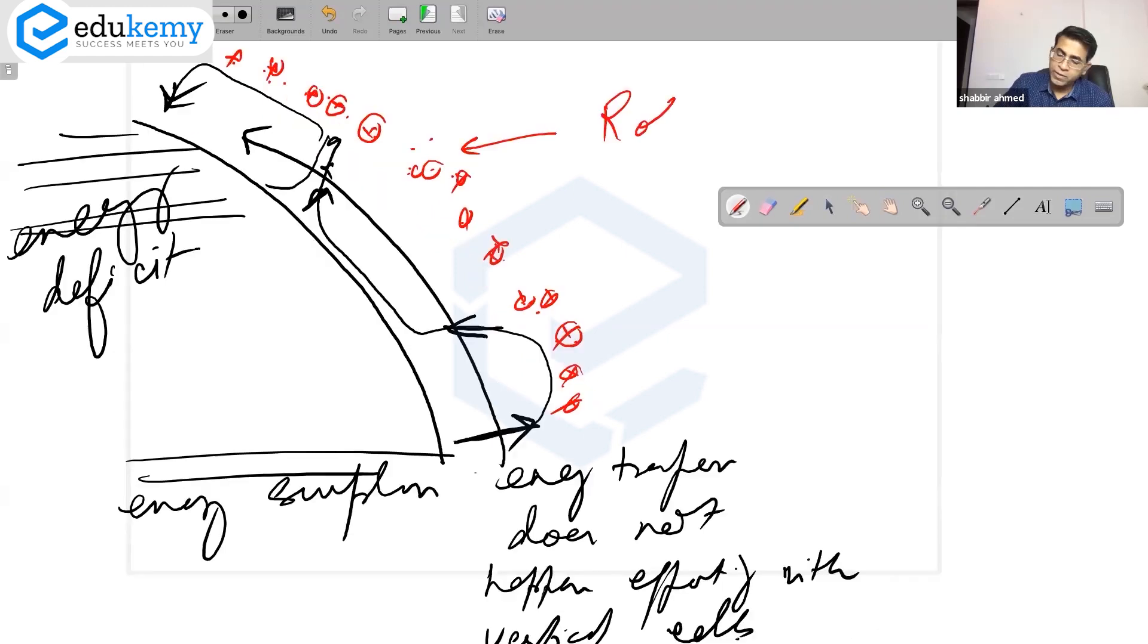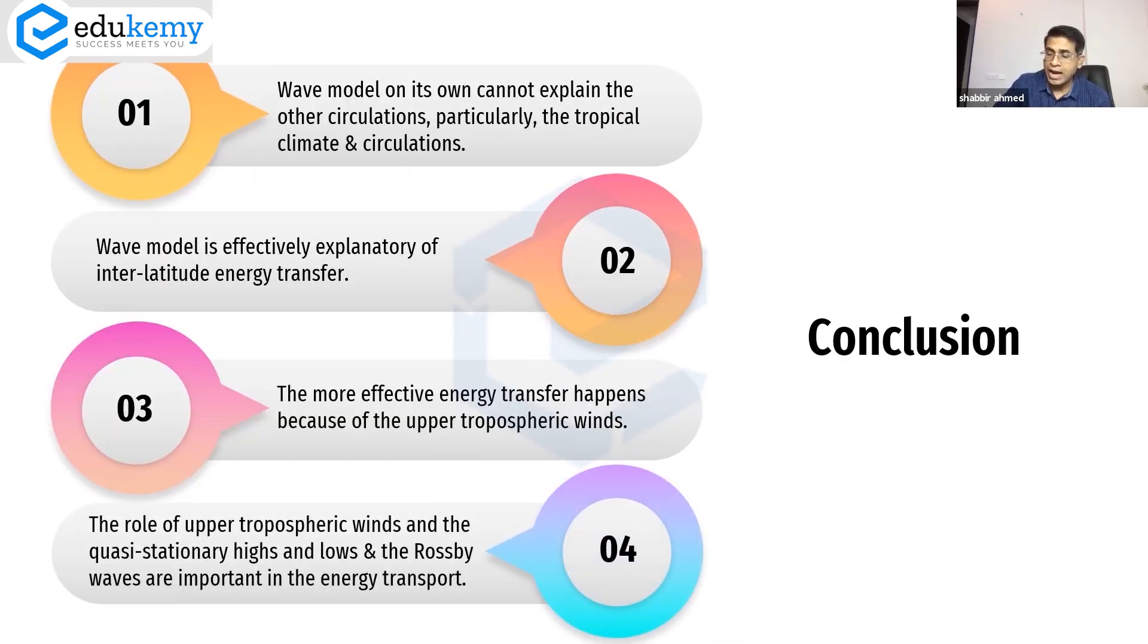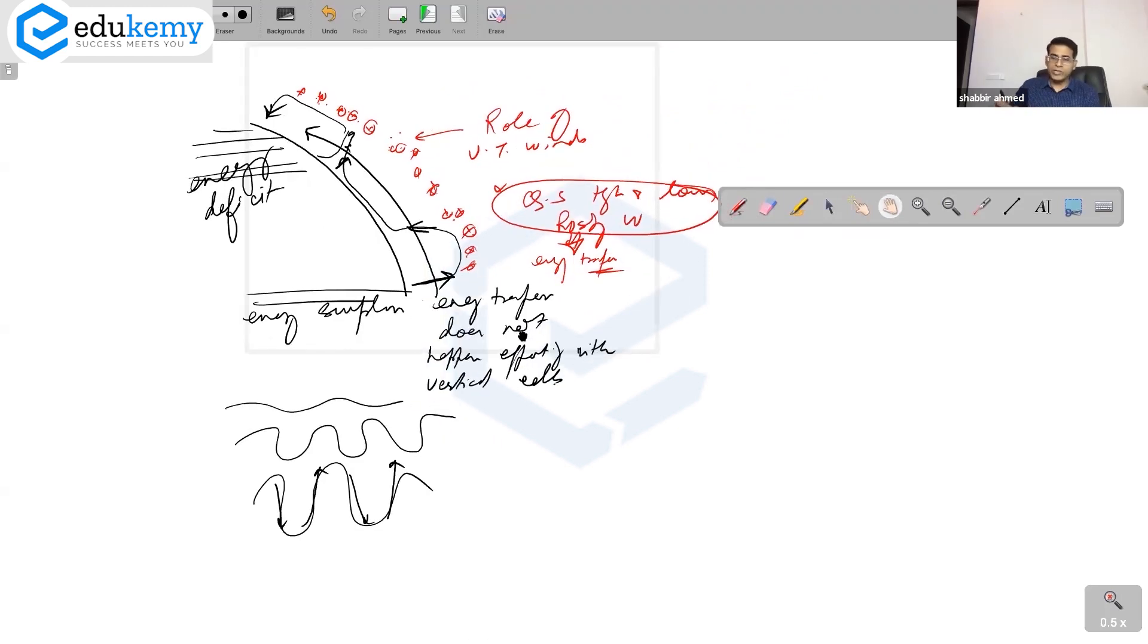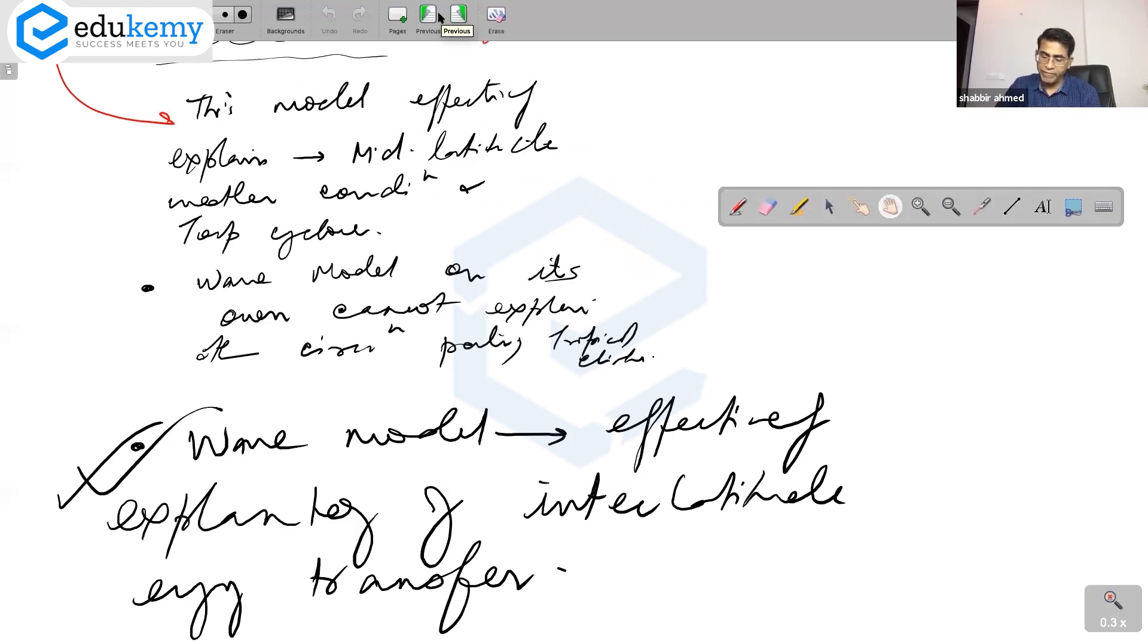The more effective transfer happens because of the upper tropospheric winds, the winds here going into the board. The role of upper tropospheric winds and the quasi-stationary highs and lows, the Rossby waves—these are more important in the energy transfer. When waves meander, they catch energy and take it towards high latitudes. So this is an important point in your evaluation of the wave model.